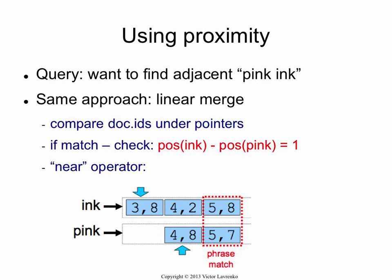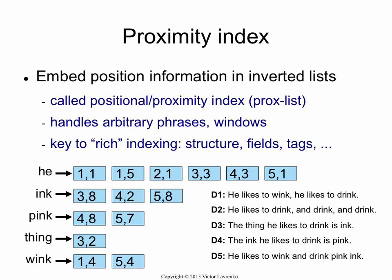So the document IDs don't match — you increment the smaller pointer, and you end up with five eight and five seven. The document number matches, so you do the next check: the difference of positions. Position of 'ink' is eight, position of 'pink' is seven — eight minus seven is one. I'm satisfied, I find my match. If 'ink' occurs twice in document four, you would have two separate entries. You no longer store the frequency — what you store is the list of positions.